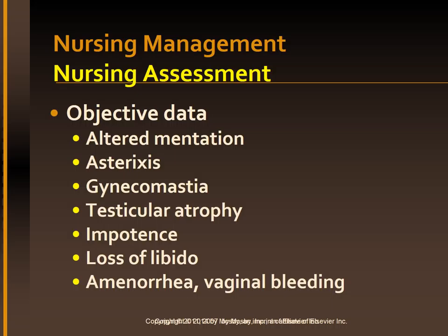Objective data also includes assessing for altered mentation and asterixis, and assessment of the reproductive system including gynecomastia and testicular atrophy, impotence, loss of libido, and amenorrhea or heavy menstrual bleeding in women.